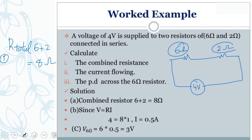For part two, we need to find the current. To find the current, we use Ohm's Law: voltage equals current times resistance, or V equals I times R.